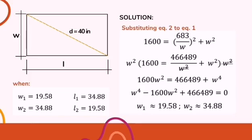So kaya ang magiging sagot niya kapag kinompute natin is magiging width equals 19.58 and the other one is 34.88. So when width sub 1 equals 19.58, ang length sub 1 niya is magiging 34.88. Kapag naman ang width sub 2 equals 34.88, ang length sub 2 naman niya is magiging 19.58.